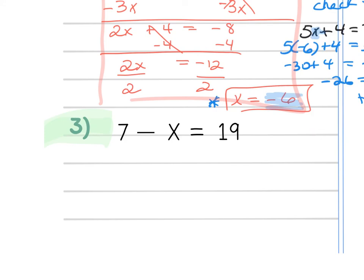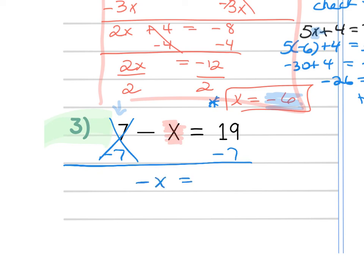Number 3 is sometimes tricky because at first you might think it's a subtraction equation and you need to add to solve. But remember your goal is to isolate x. So I need to move the 7 to the other side — instead of adding 7, I subtract 7 to get rid of it. The negative x drops down and 19 - 7 = 12. I can never leave a negative variable, so assuming a coefficient of -1, I divide both sides by -1, giving x = -12.